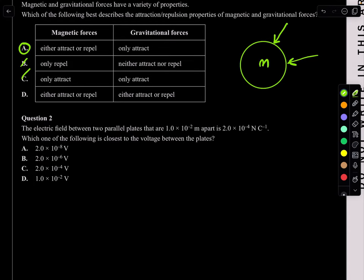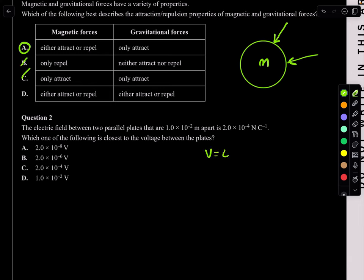Question 2. The electrical field between two parallel plates that are 1.0 × 10⁻² apart. For parallel plates, the formula is V = ED, where E is the electrical field strength and D is the distance between the plates. So V = 2.0 × 10⁻⁴ times 1.0 × 10⁻². That gives me 2.0 × 10⁻⁶. So the answer is B.